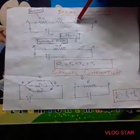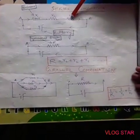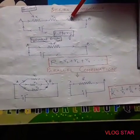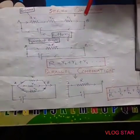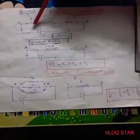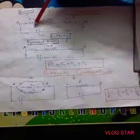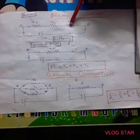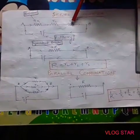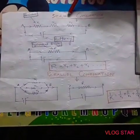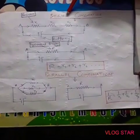When two or more resistors are connected serially, one after another, it's called series combination.